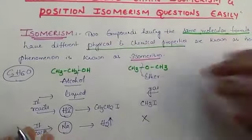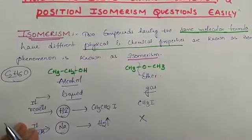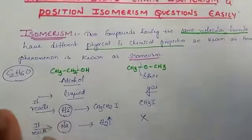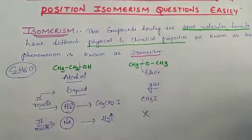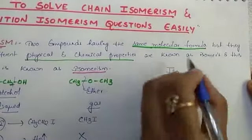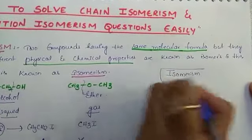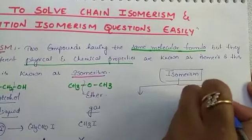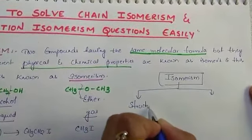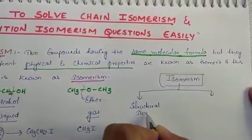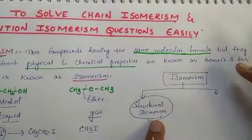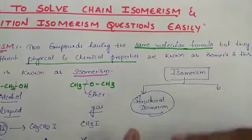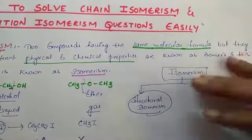At least one physical or chemical property should be different — that is enough. If any one property is different, those two are isomers. If all the properties are the same, then both compounds are identical. Isomerism is of two types: structural and stereo. Structural isomerism means two compounds have the same molecular formula but different structures. Under structural isomerism, we have chain isomerism and position isomerism.